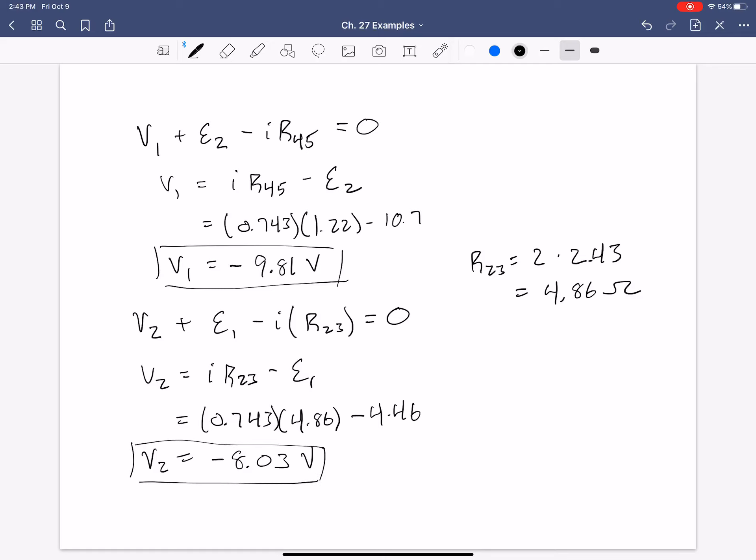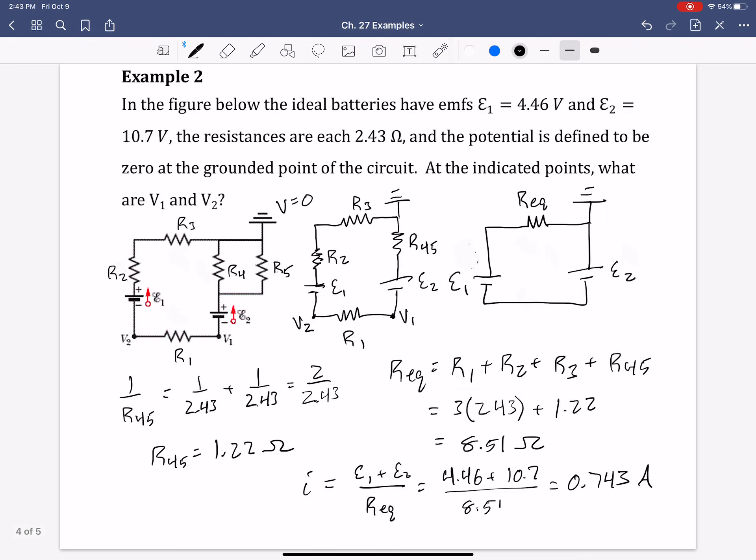And so, they're both negative, however, the difference between them, which one's larger? V2 is slightly larger than V1. The voltage in this section of the circuit is larger than in this section, and this battery is larger than that battery, so the current should be going this direction.